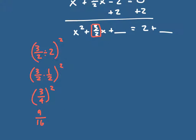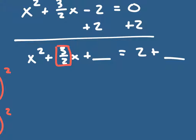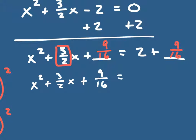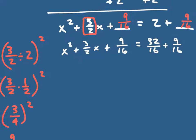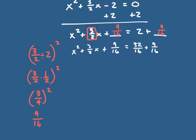Going back up, nine-sixteenths is what goes in the blank. Looking at the left side, it's not pretty, but it is factorable. On the right side, 2 over 1 turns into 32-sixteenths plus nine-sixteenths. Now what two numbers are going to add to three-halves but multiply to nine-sixteenths?